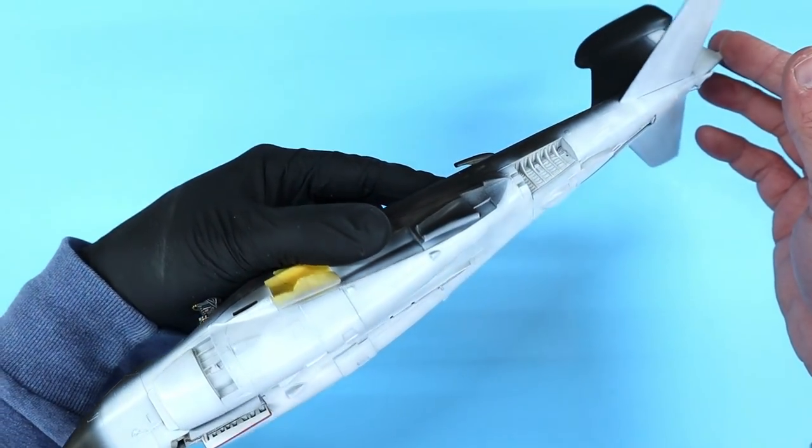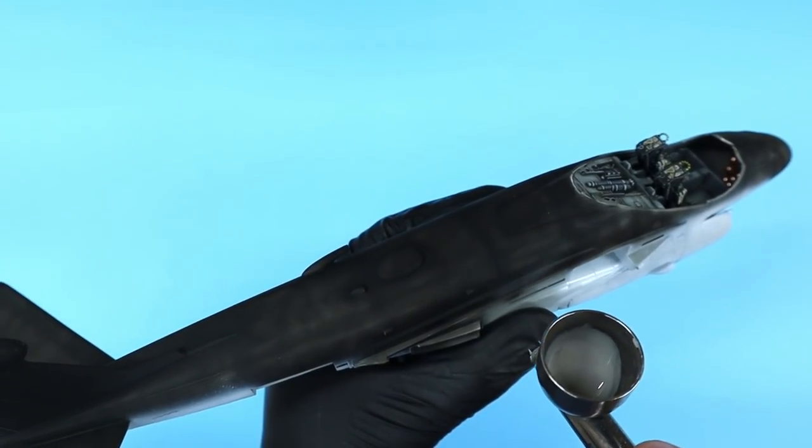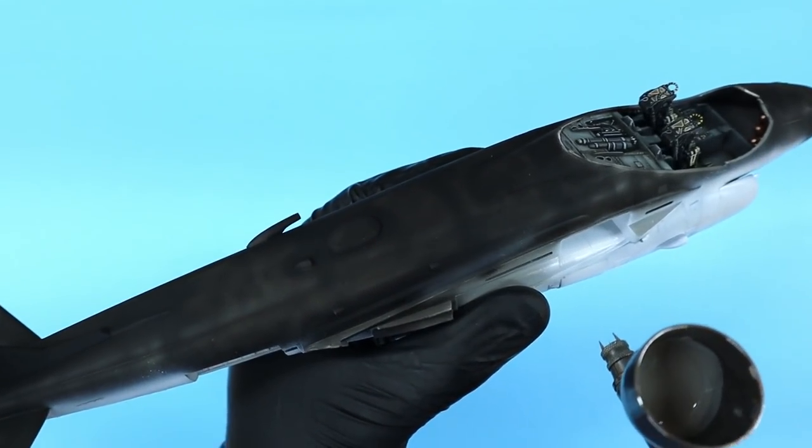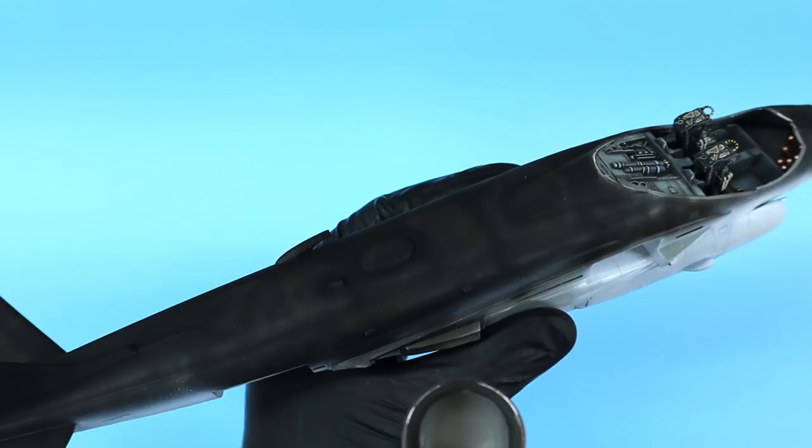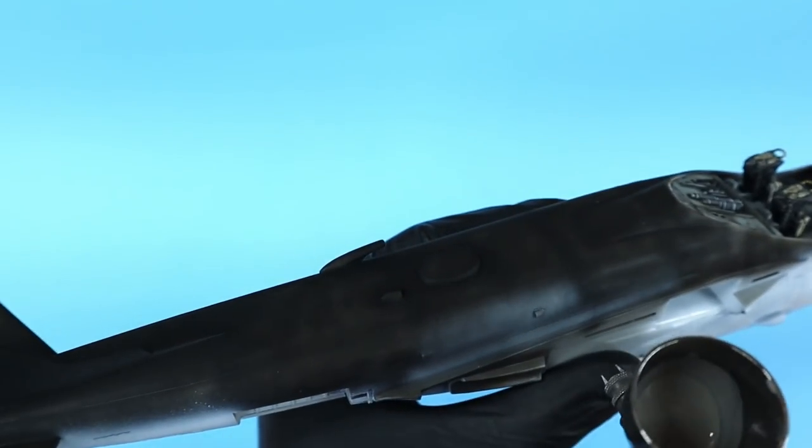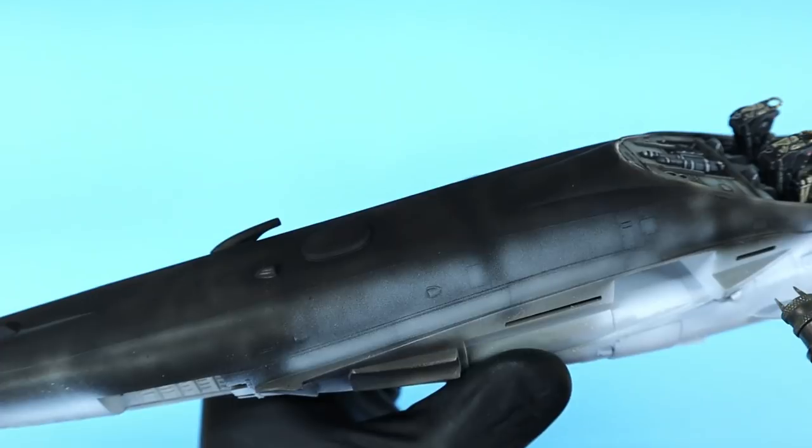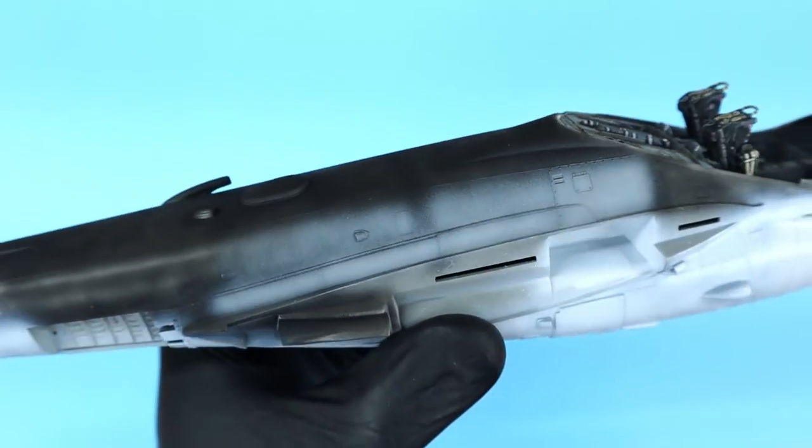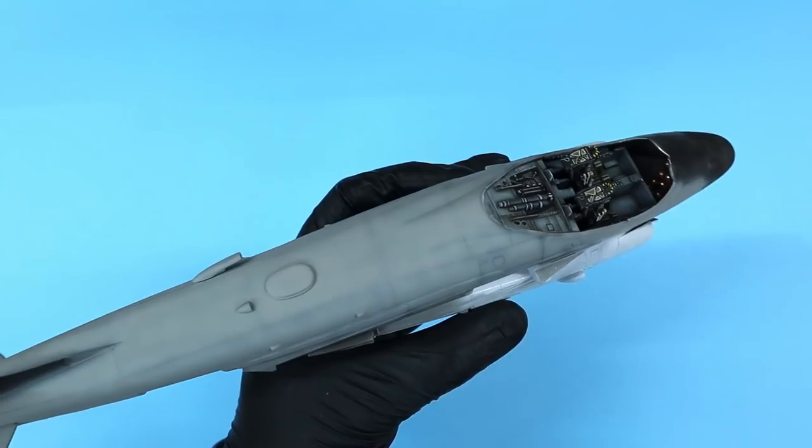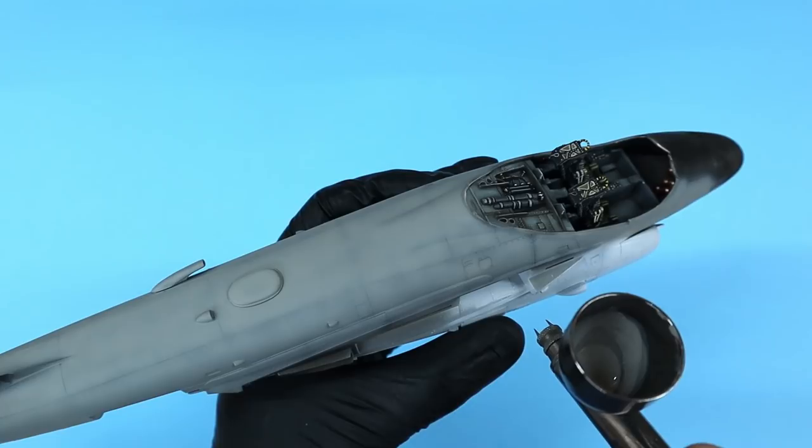Since Tamiya doesn't offer a straight up light gull gray, I mixed up a custom blend using white, sky gray, and a little medium gray. I sprayed this mixture on all of the topside areas. I made sure to keep the spray pattern a little splotchy to allow some of the black to come through and provide a little contrast along some of the panel lines. I continued in this way until the entire fuselage had been painted.